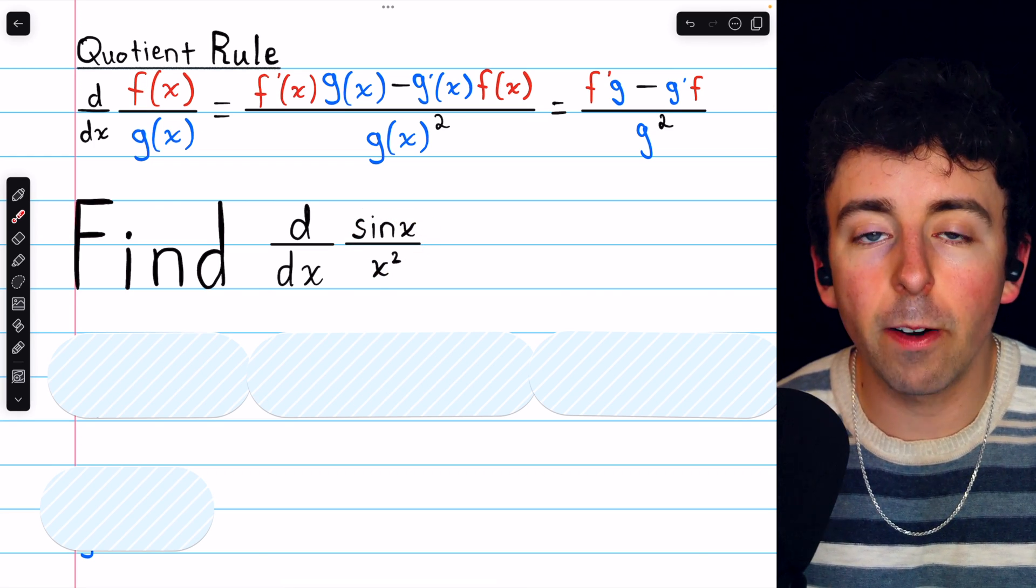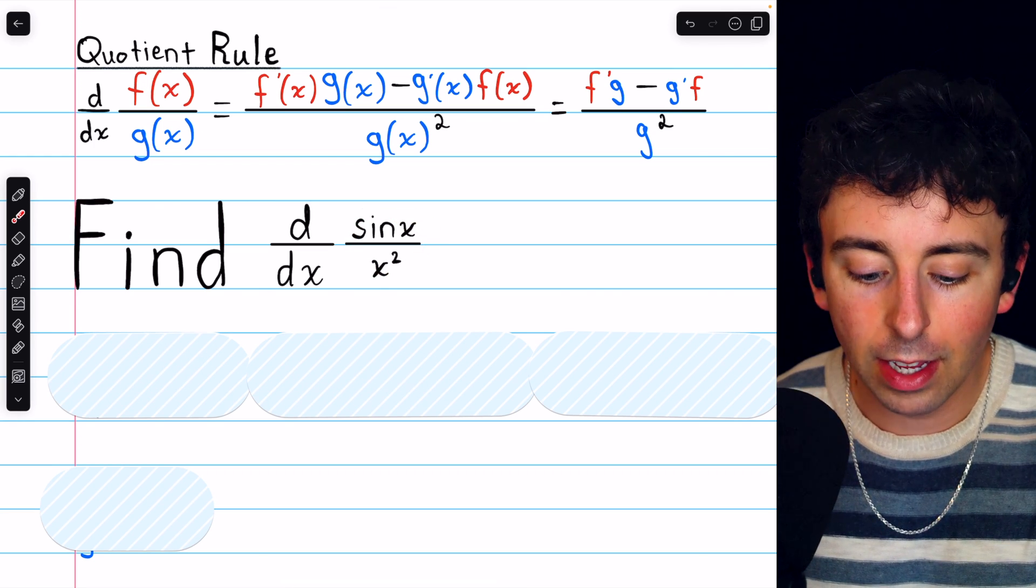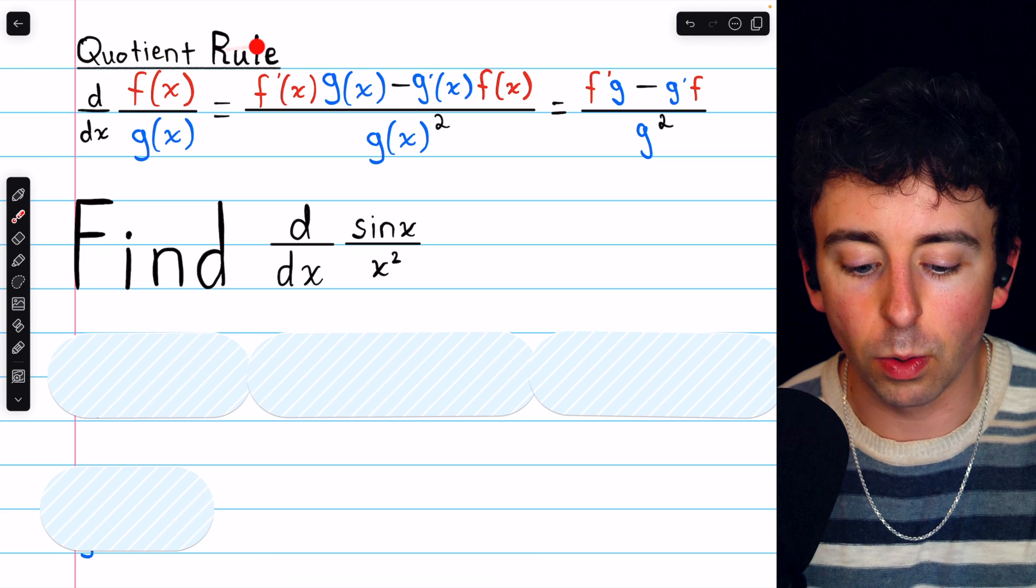Sine x divided by x squared is a quotient of functions, so to take its derivative we need to use the quotient rule.